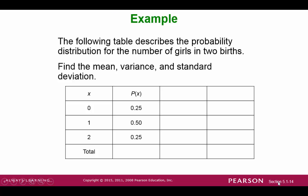Here's an example. The table describes the probability of the number of girls in two births. So by using probability, we can find the probability of having no girls out of two births, one girl out of two births, or two girls out of two births.